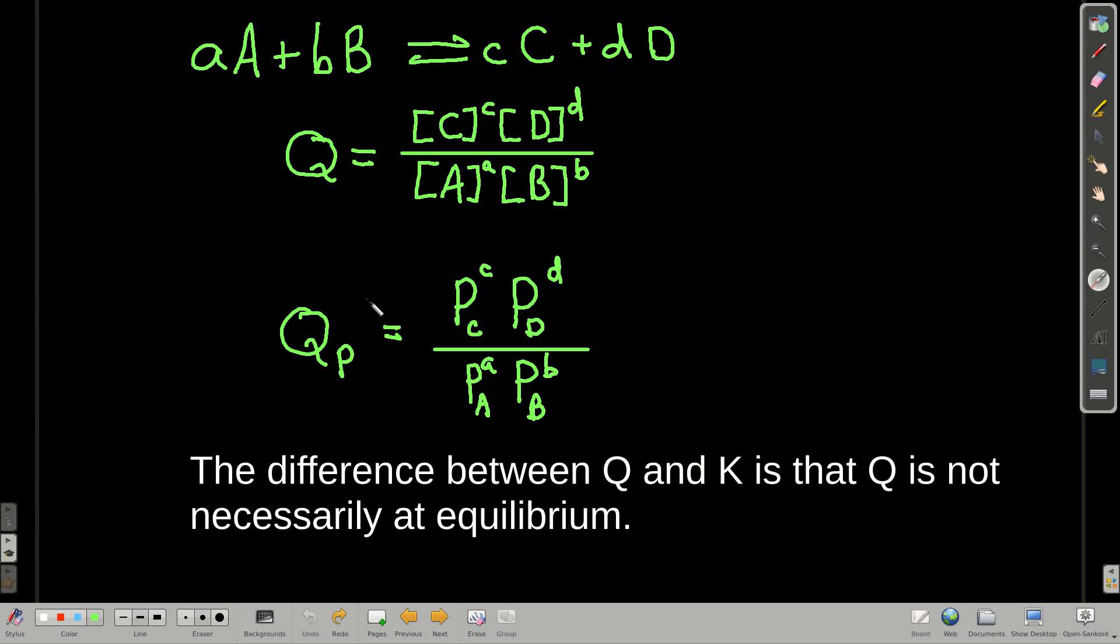So first, the reaction quotient Q. For our generic equilibrium reaction aA + bB ⇌ cC + dD, Q looks the same as K does. In other words, the concentrations of the products raised to the powers of their coefficients over the reactants raised to their powers, or the partial pressures, the same thing.